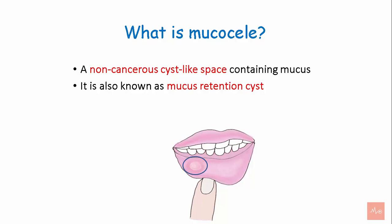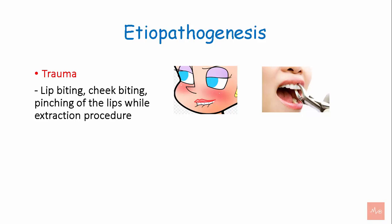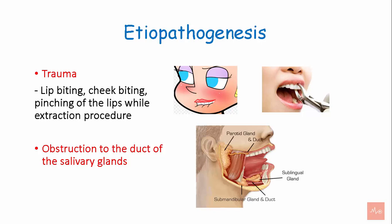A mucocele typically appears as a dome-shaped mucosal swelling. Its pathogenesis includes lip biting, cheek biting, pinching of the lip during an extraction procedure, and obstruction to the duct of the salivary glands, which can also cause a mucocele.